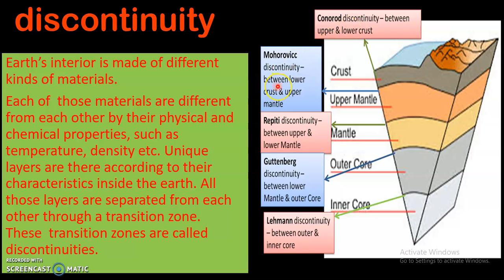The second is Mohorovičić discontinuity. It is a boundary or transition zone which separates the lower crust and upper mantle, or simply it is a boundary which separates the crust from the mantle. It is called Mohorovičić discontinuity.